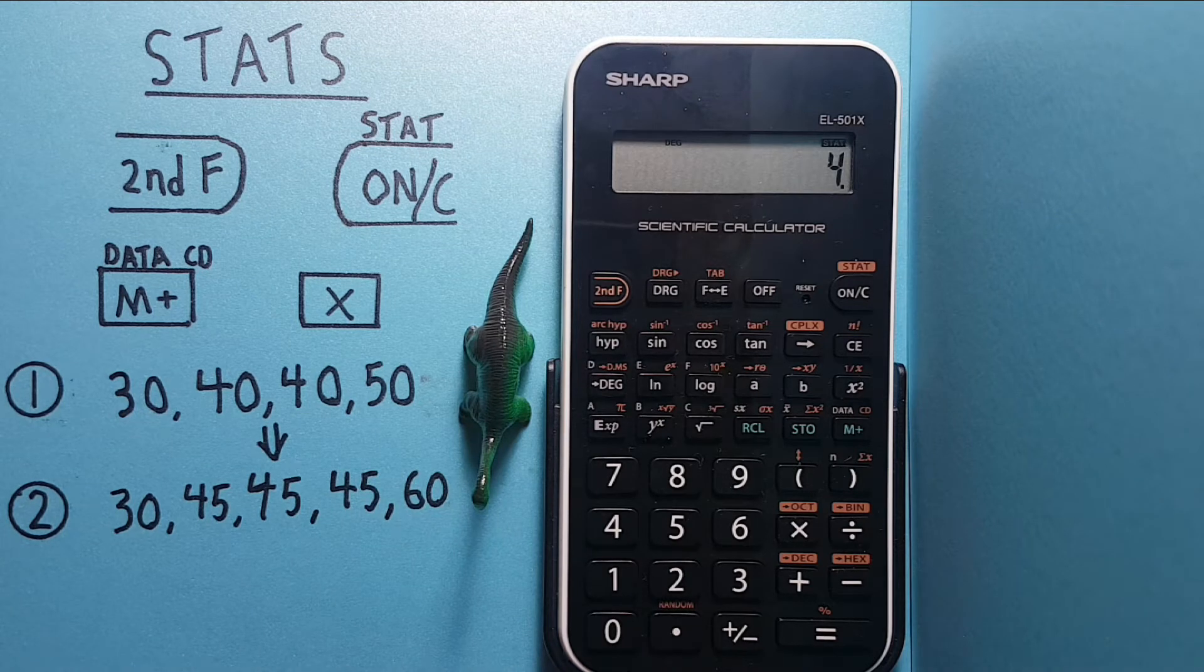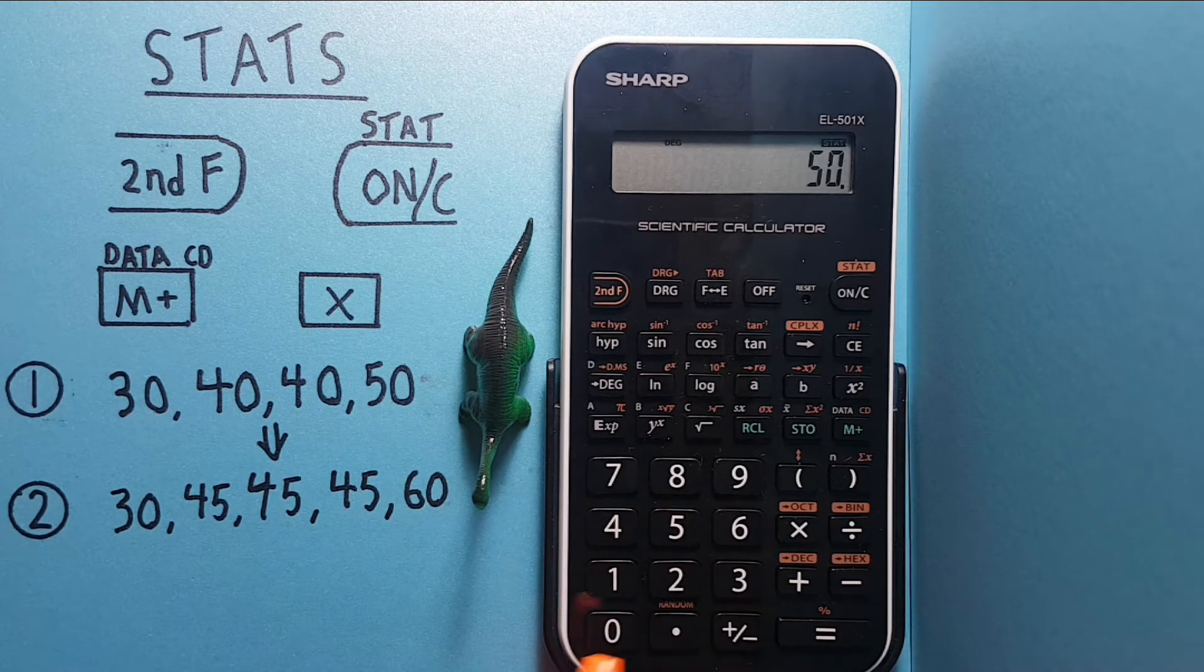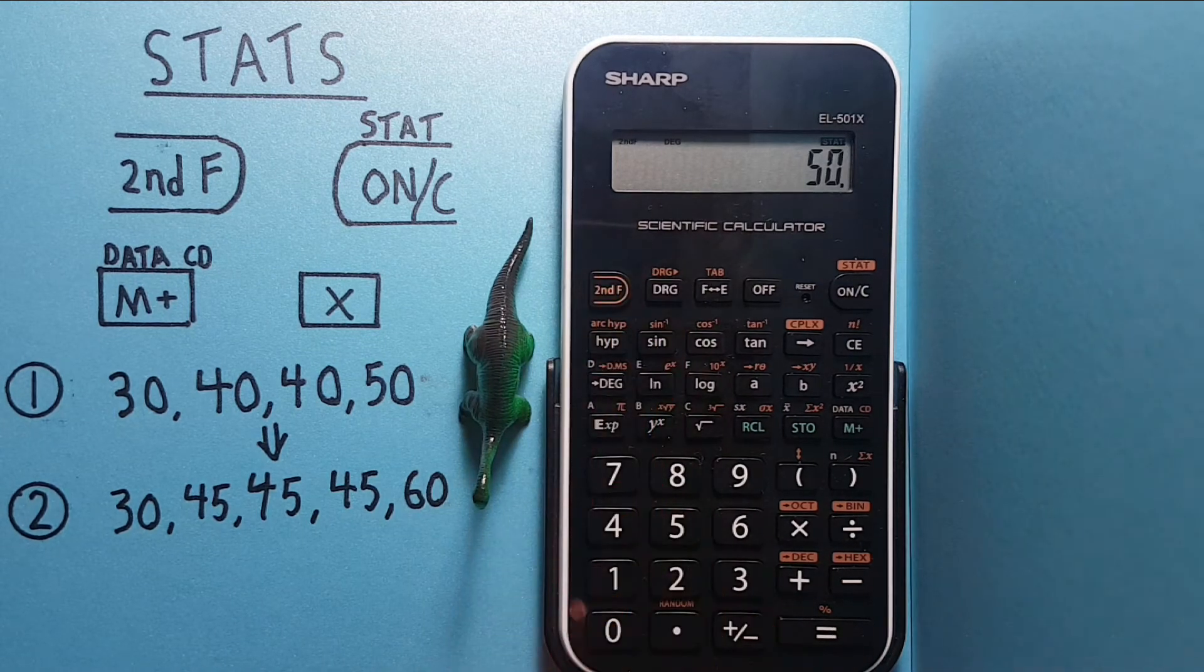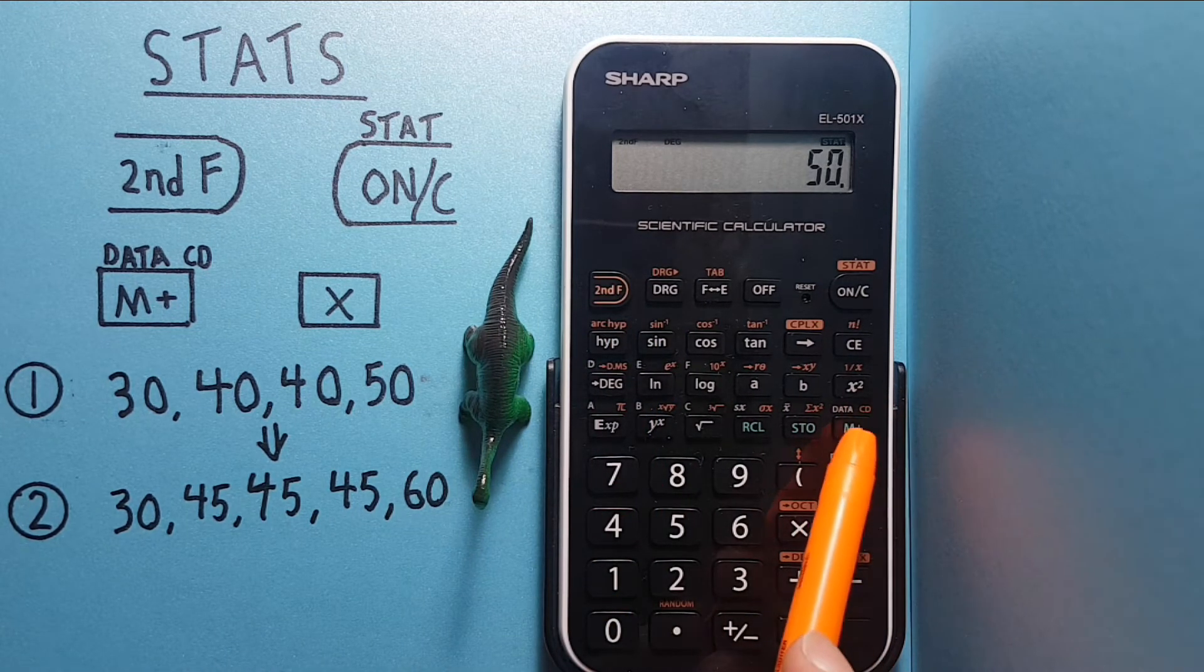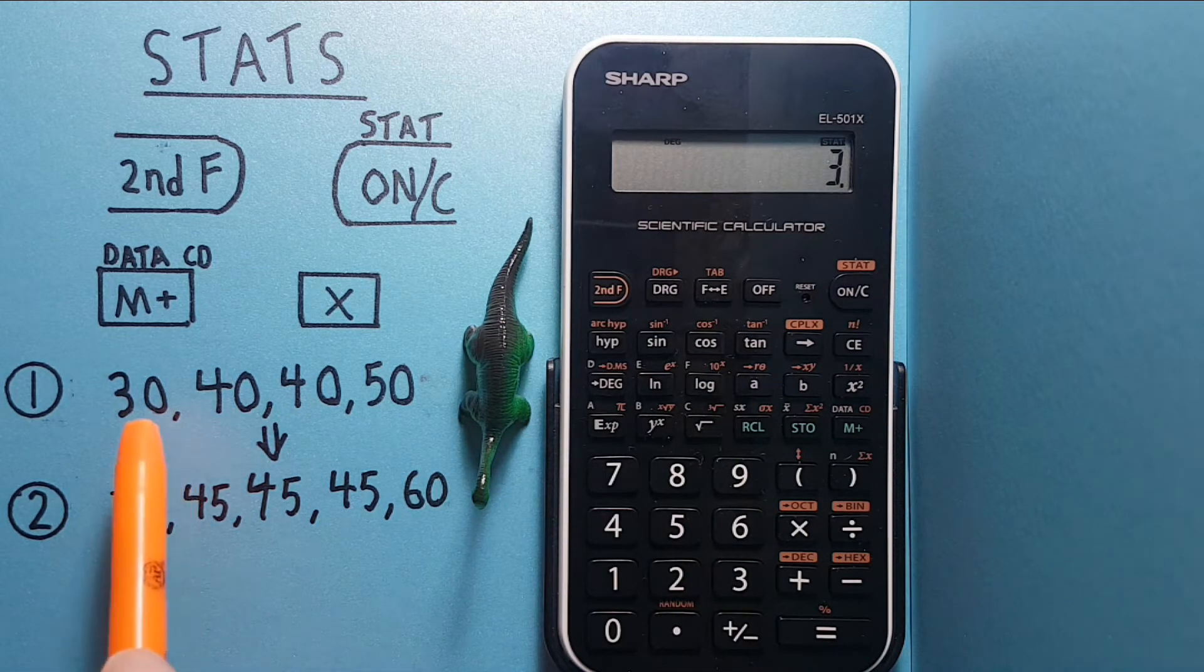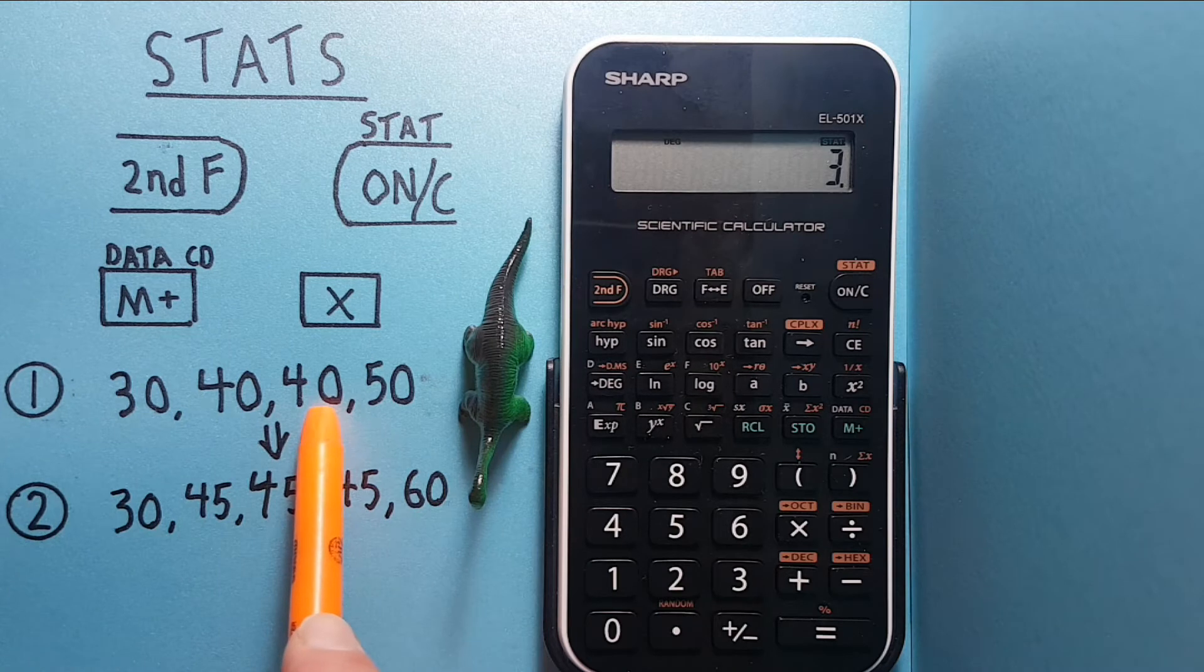If we want to take 50 out, we again put 50 on the stack, then press second function, and then the M plus with the CD over top. Now we have three. This tells us we have three numbers in our data set, these three.